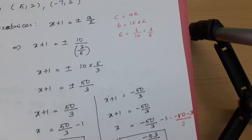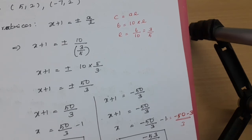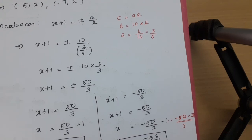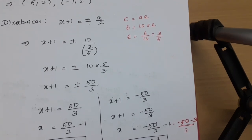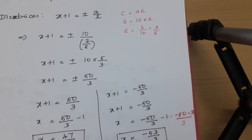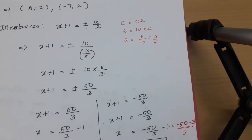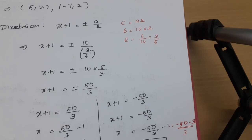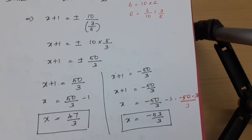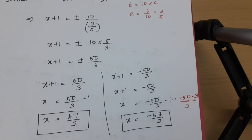Students, the ellipse is a very easy topic. For the whole week I have been explaining the ellipse only. If you missed Tuesday's class, go through YouTube and follow all the sums based on the ellipse. There are only two types: major axis along X axis, and major axis along Y axis. Thank you students.